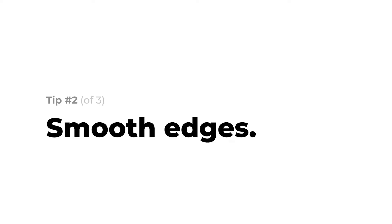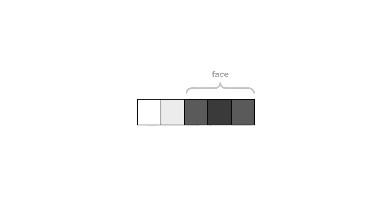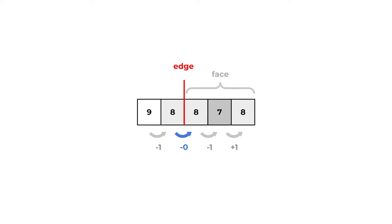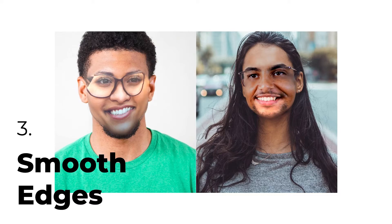Hack number two is to smooth colors along the edges. Consider a small 5-pixel image where the pasted face is in the right 3 pixels, and we see an edge denoted in red. Looking at the image's numeric representation and the differences between pixels: subtract 1 from the first pixel to get the second, subtract 6, subtract 1, then add 1. The edge corresponds to a high difference. So to remove the edge, we reset that difference to 0 and recompute, keeping all other differences the same — removing our perceived edge. We call this technique gradient-domain fusion.